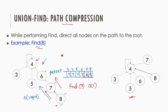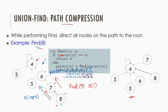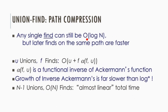The pseudocode of find is: when the parent information is the same as the index, it is the representative; otherwise we keep finding the parent information and update accordingly. As discussed, the first find operation can still take O(log n), but later find operations along the same path will be faster. For U union operations and F find operations, the complexity is O((U + F) · α(F, U)), where α(F, U) is the functional inverse of the Ackermann function. Since this inverse grows extremely slowly, n-1 union operations and O(n) find operations require almost linear time.